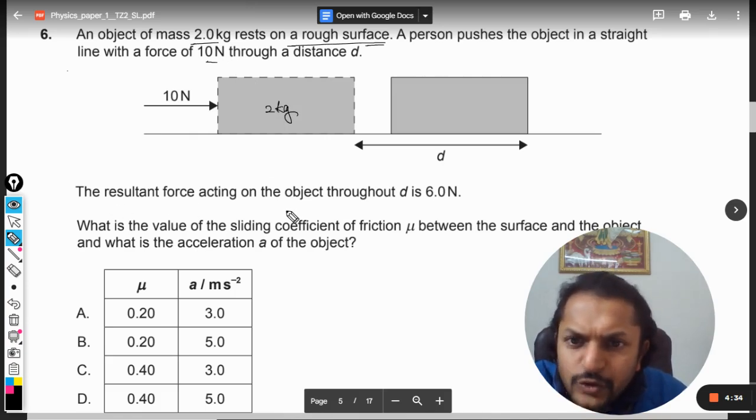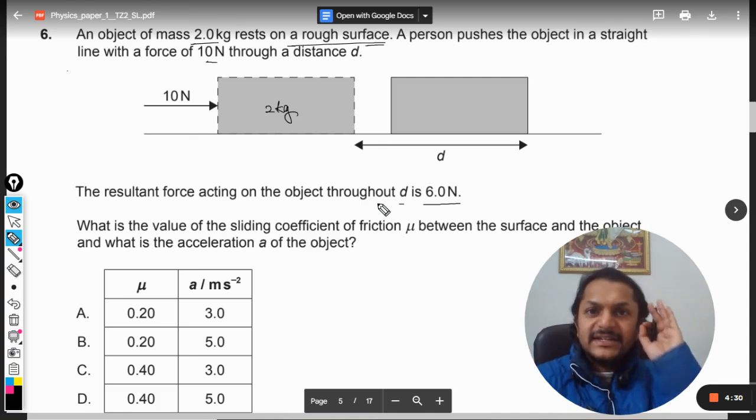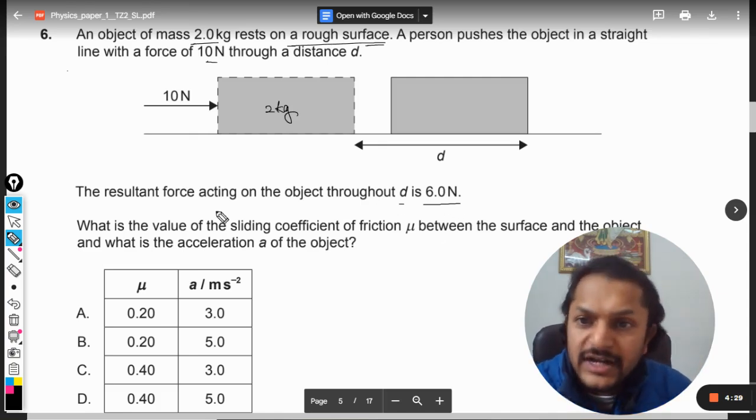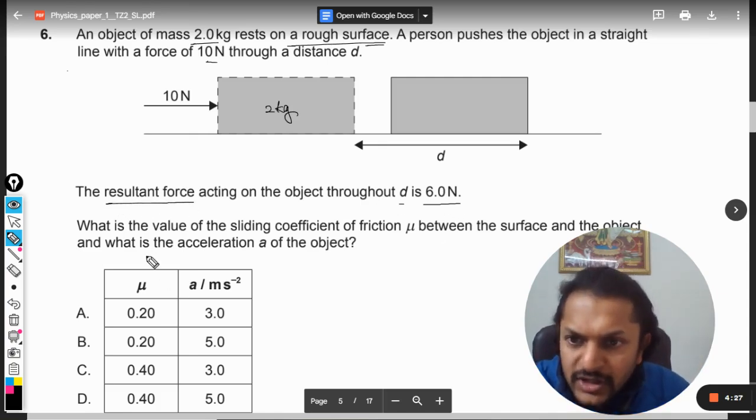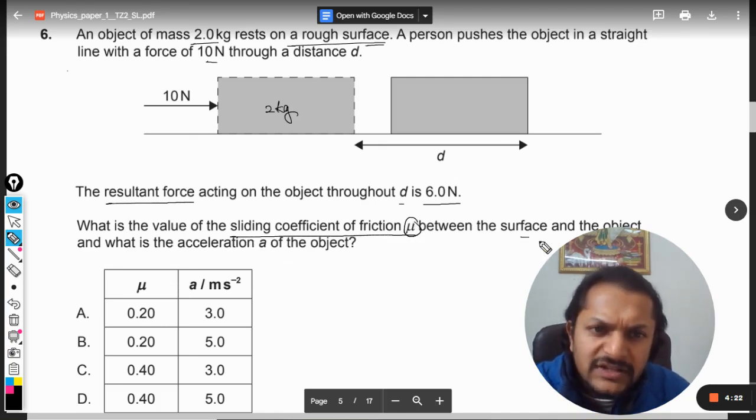The resultant force acting on the object through d is taken to be 6 Newton. Now this is the resultant force that is acting. What is the value of the sliding coefficient of friction μ between the surface and the object, and what is the acceleration a of the object?